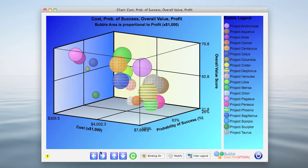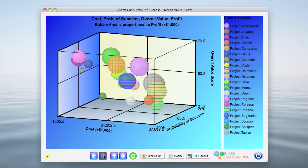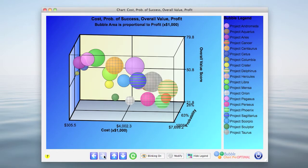We'll start by rotating the chart counter-clockwise or to the right by clicking the right arrow button at the bottom of the form. Notice that with each click of the button, the chart rotates a small amount. Now, we can more easily see the bubbles in relationship to the overall value on the vertical axis and cost on the horizontal axis.